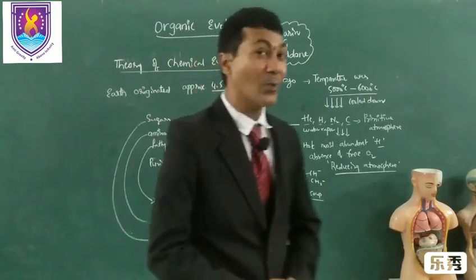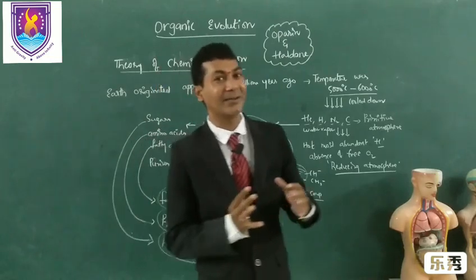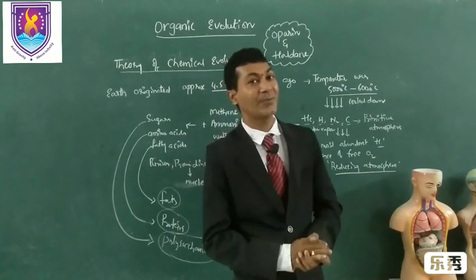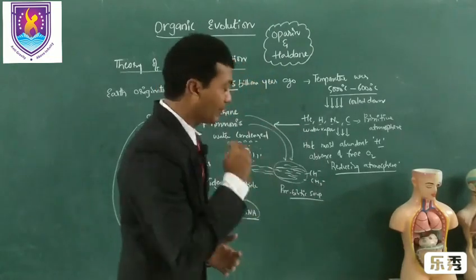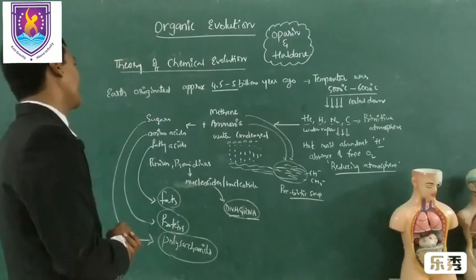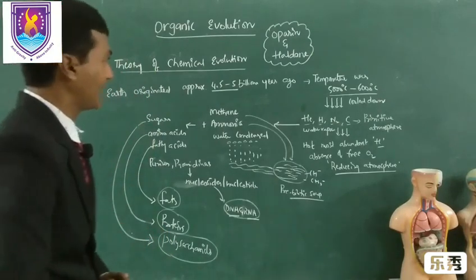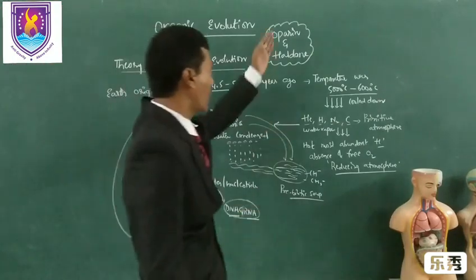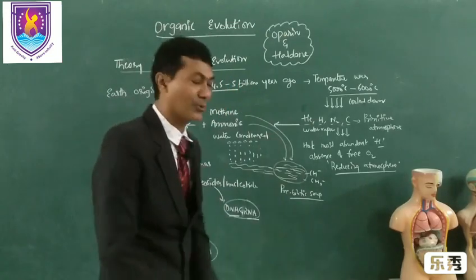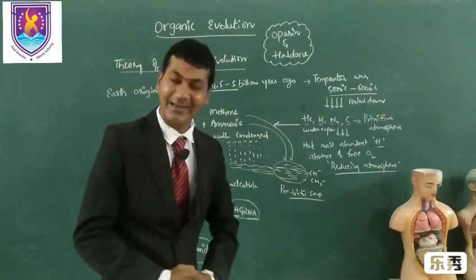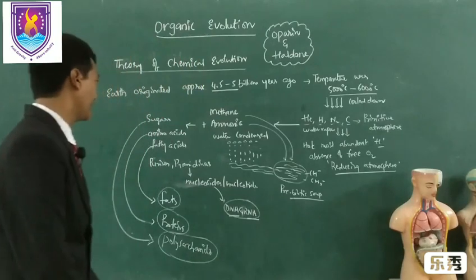Chemical evolution explains how life started with the formation of chemicals. This theory was proposed by Oparin and supported by Haldane — the Oparin-Haldane theory of chemical evolution.